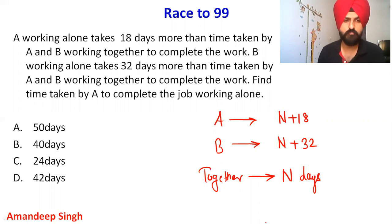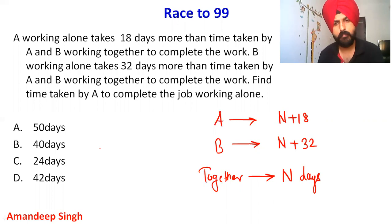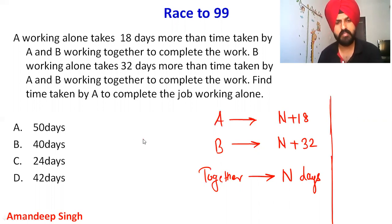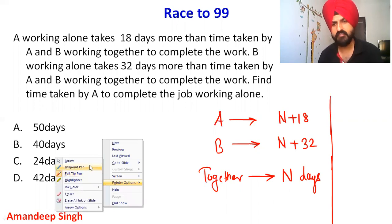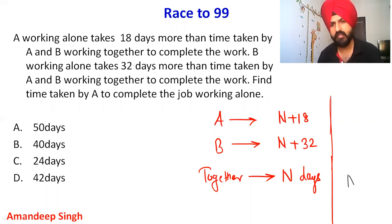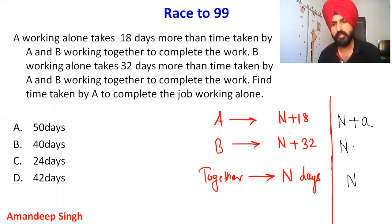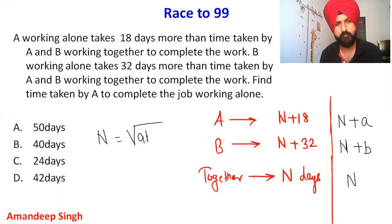The question asks: what is the number of days taken by A working alone? The shortcut here is: if together they take N days, and A takes 'a' days extra compared to N, and B takes 'b' days extra compared to N, then you can directly write N = √(a × b). This is the formula you can use.